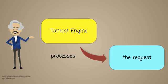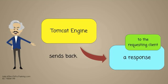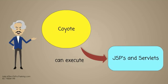The Tomcat engine processes the request and sends back a response to the requesting client. Coyote can execute JSPs and servlets.